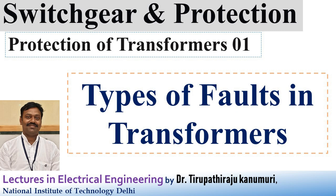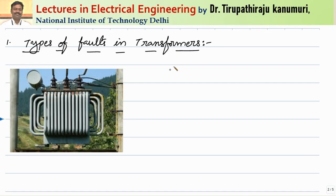Today we are going to discuss different types of faults that happen in the transformer, meaning we are going to introduce the protection of transformers. Generally a transformer is a static device because it doesn't have any rotating parts, and in most cases it is sealed and immersed inside oil. Outside there will be a conservator tank, and generally a Buchholz relay is used for transformers greater than 500 kVA.